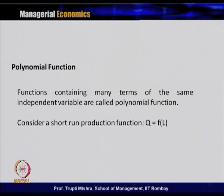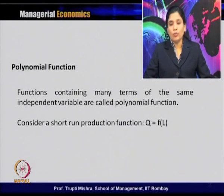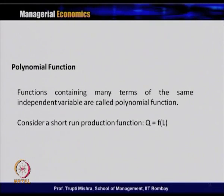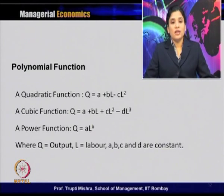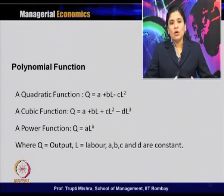The third type of function used in economic analysis is the polynomial function. A polynomial function contains many terms of the same independent variable. Consider a short-run production function where output Q is a function of labor L. Polynomial functions can take different forms: sometimes quadratic, sometimes cubic, sometimes a power function. For the production function with constants A, B, C, D: quadratic form is Q = A + BL − CL²; cubic form is Q = A + BL + CL² − DL³; and power form is Q = A · L^B.